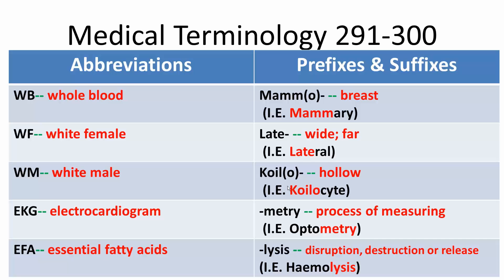Chole — or choleo — means hollow. Choleocyte is a concave or hollow cell. Metry is the process of measuring, so optometry.